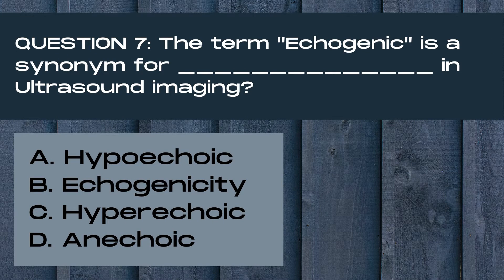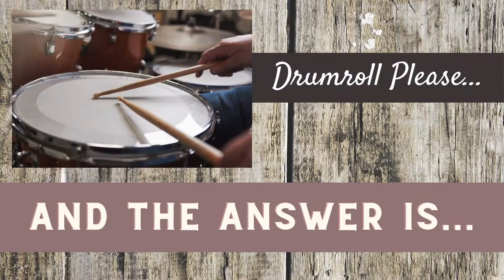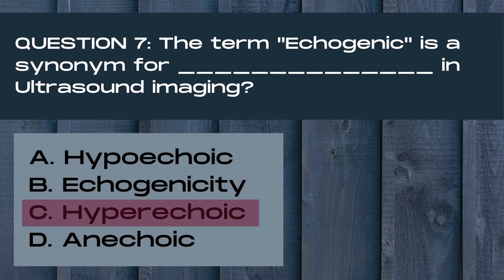Question 7. The term echogenic is a synonym for blank in ultrasound imaging. A. Hypoechoic, B. Echogenicity, C. Hyperechoic, or D. Anechoic. And the answer is C. Hyperechoic. The term echogenic in ultrasound imaging means that the area has more echoes, or brighter echoes, than the surrounding fat. Areas that are light gray or white on ultrasound are known as hyperechoic, making these two terms synonymous with each other.